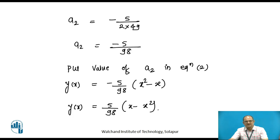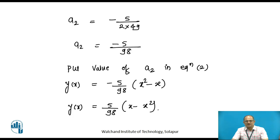Please remember the four steps. Step 1: assume a trial solution and apply boundary conditions to find the constants. Step 2: find the weighting function, which is the partial derivative of the trial solution with respect to the unknown parameter. Step 3: find the domain residual. Step 4: minimize the domain residual by integrating its product with the weighting function over the domain and setting it to zero.